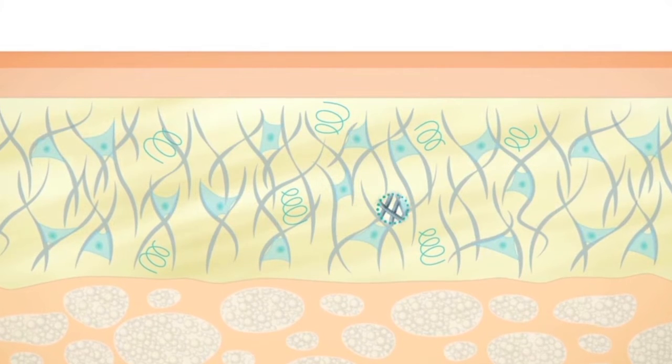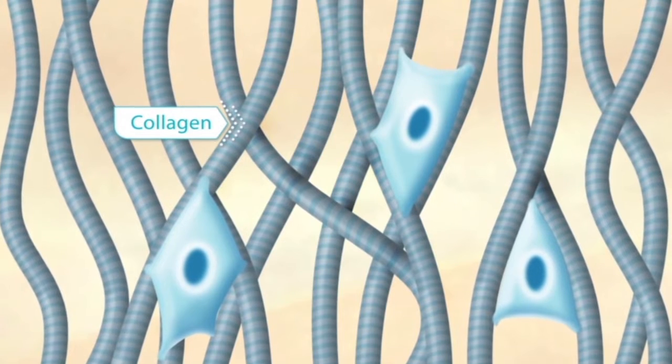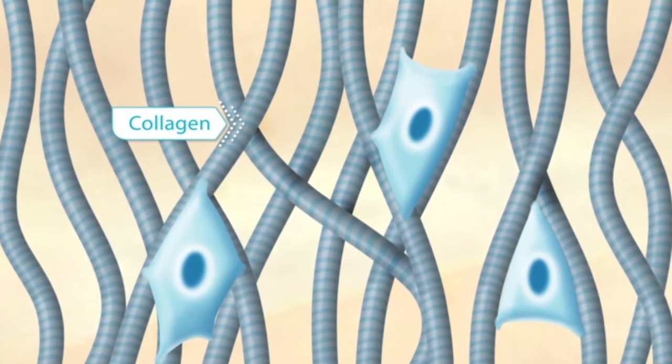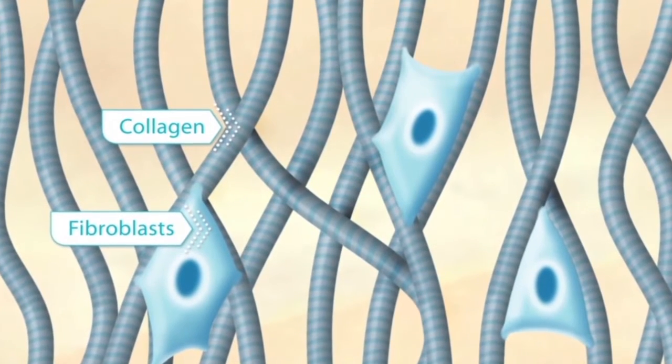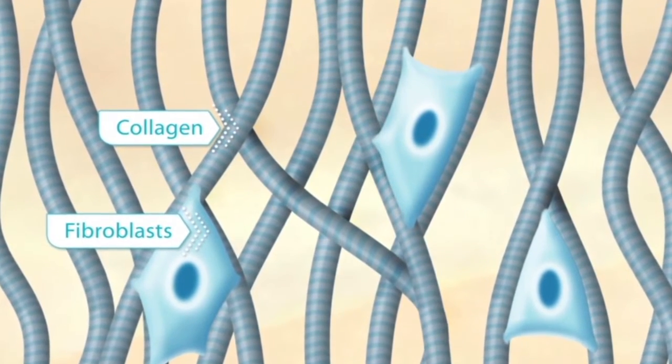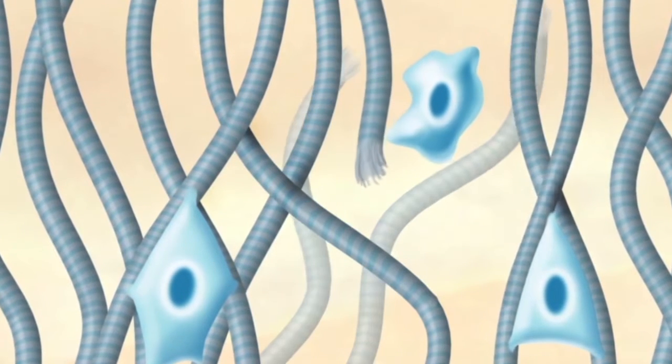Its most abundant component is collagen, a protein that ensures the structural integrity of the skin. Fibroblasts stretch out through the collagen network, and the resulting mechanical tension regulates collagen synthesis.